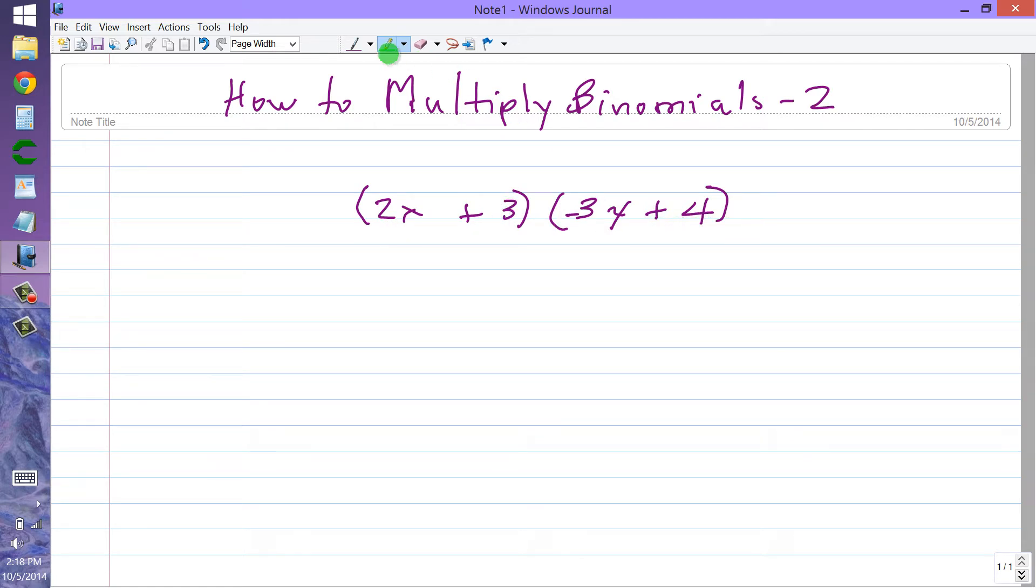In this particular case, I should make it clear that's a minus 3x. 2x plus 3, that quantity times the quantity minus 3x plus 4.